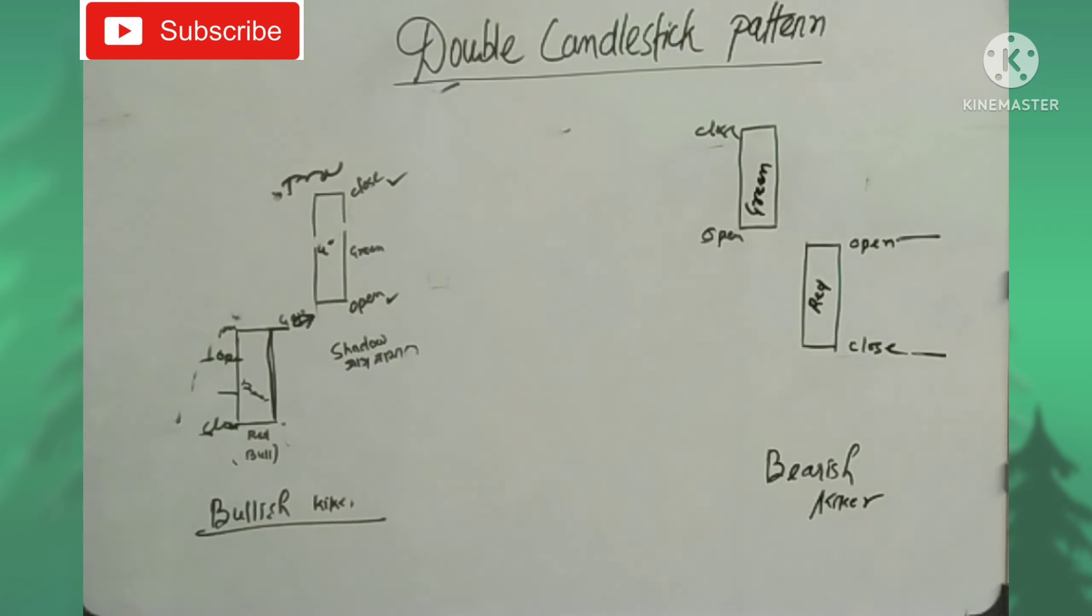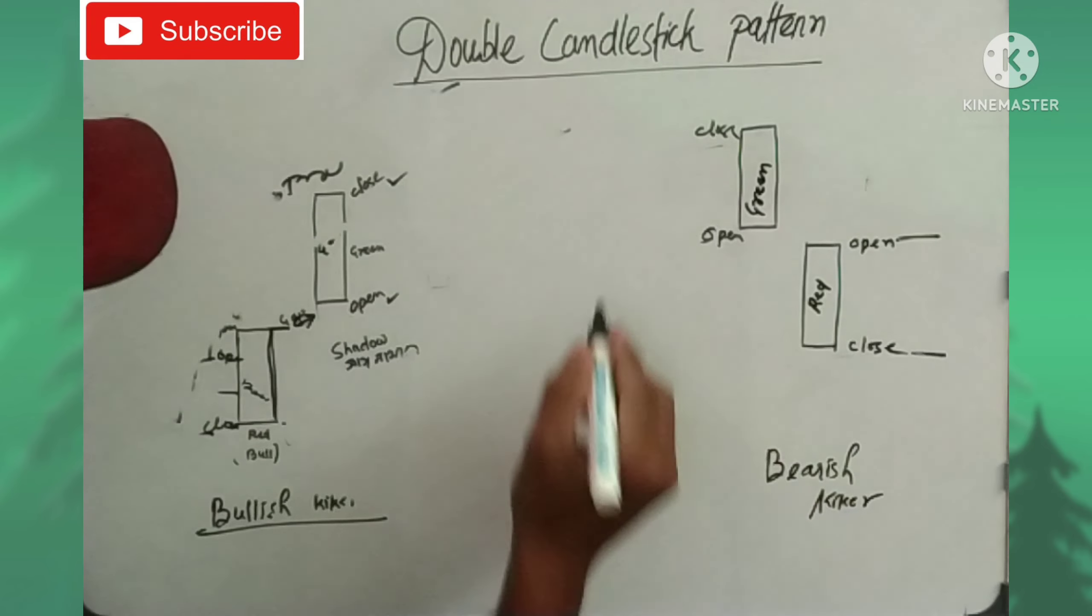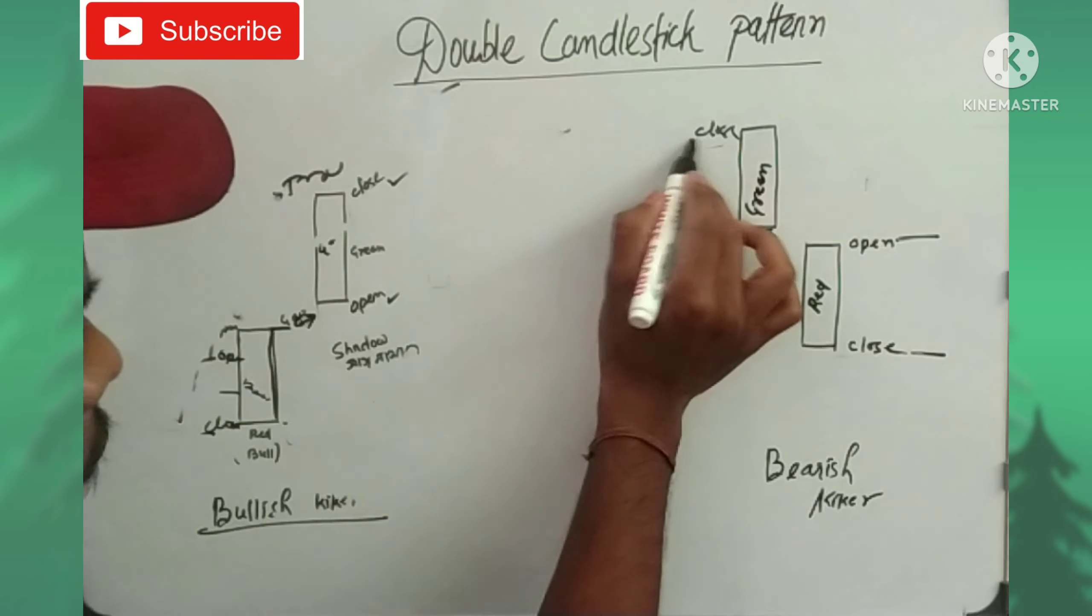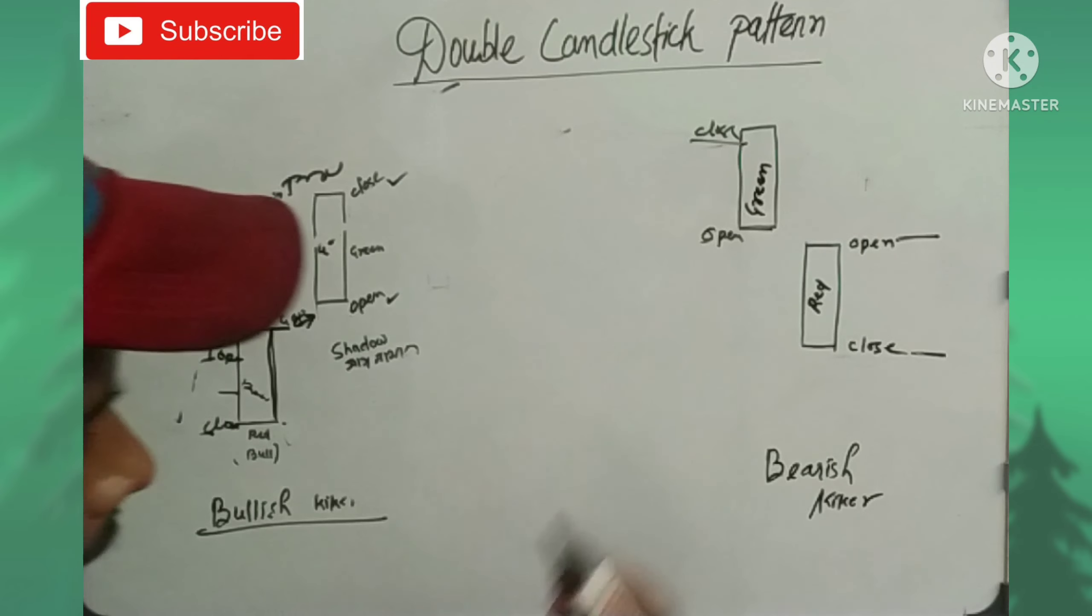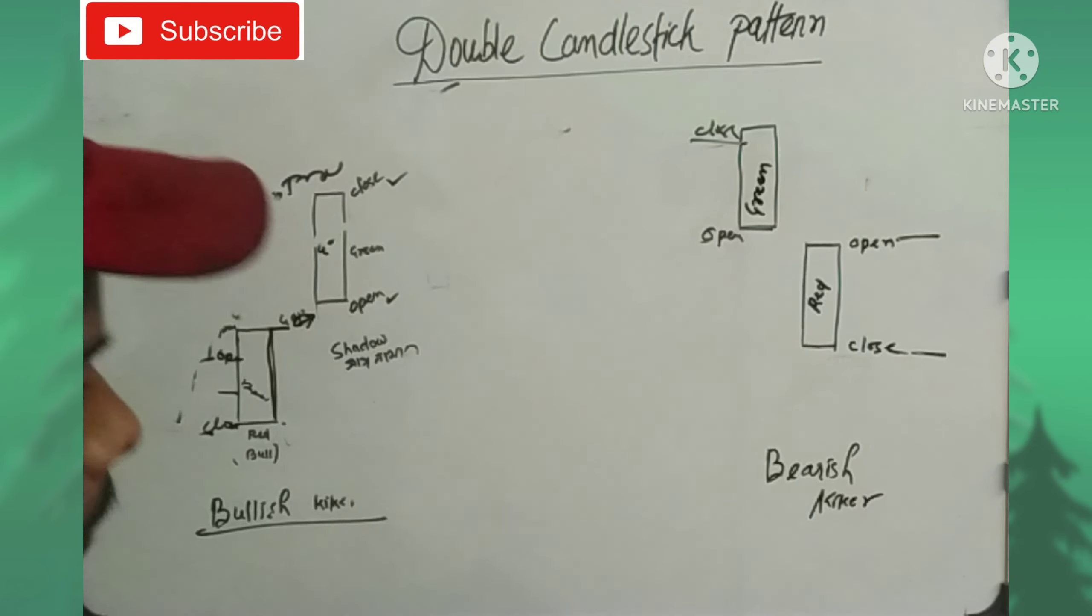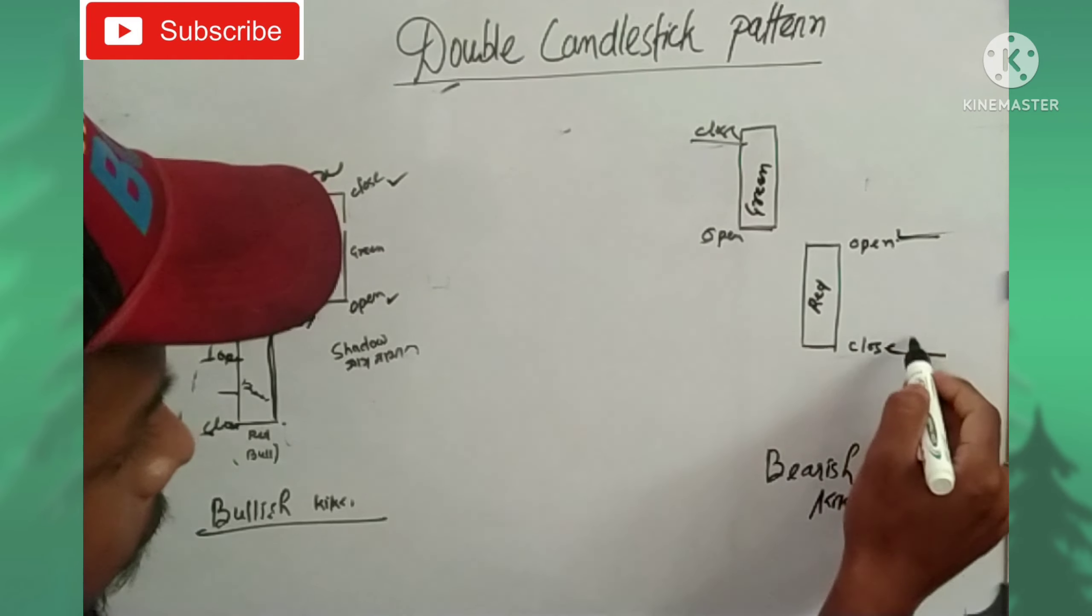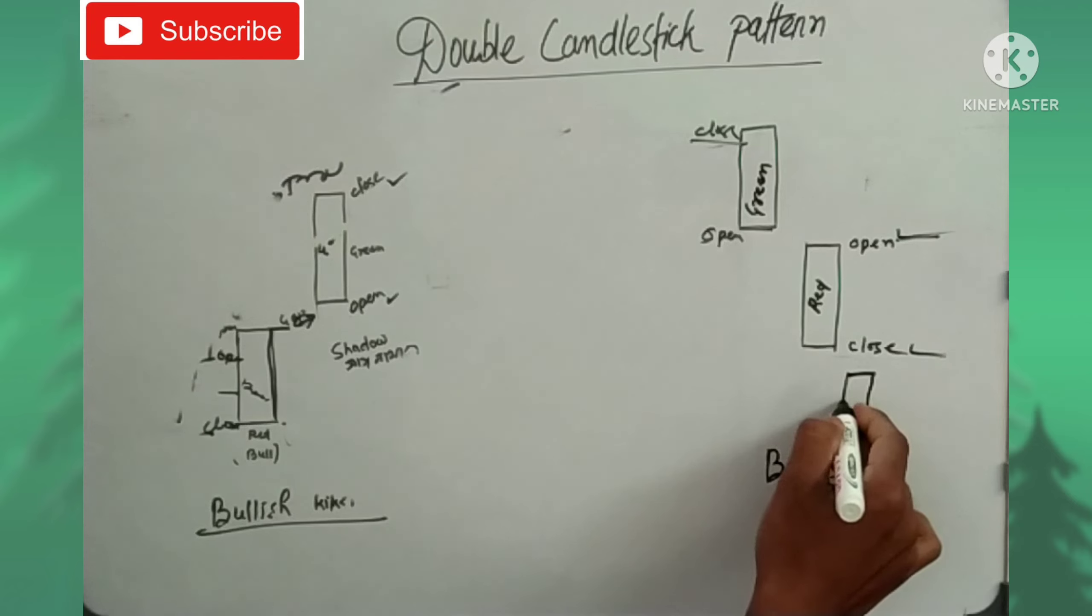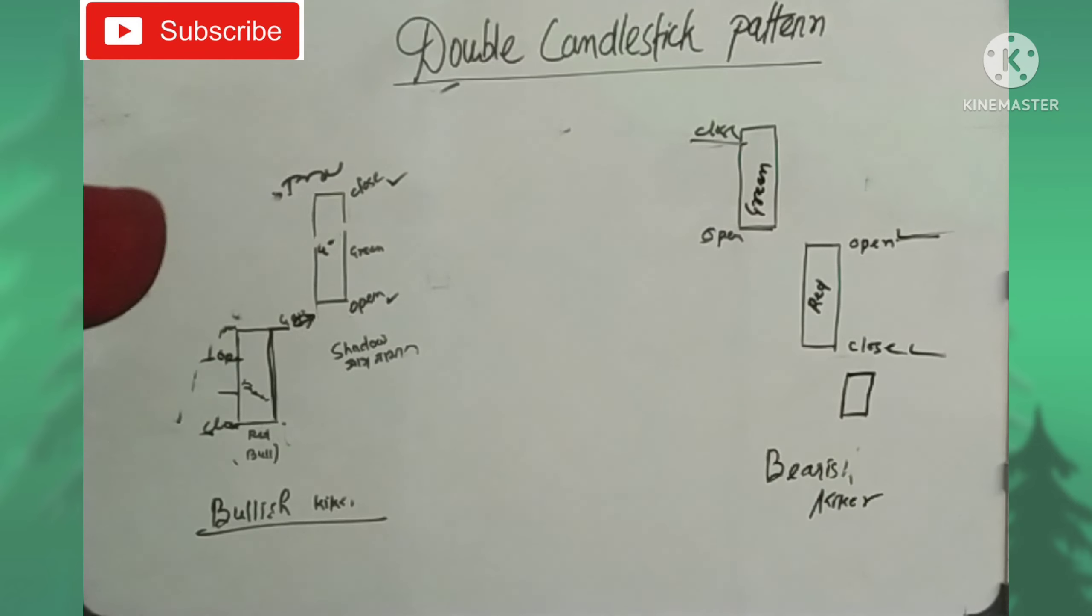This bearish candlestick pattern starts with a green candle closing, then a red candle forms. When another candle forms within this range, we can trade to catch a bullish reversal.